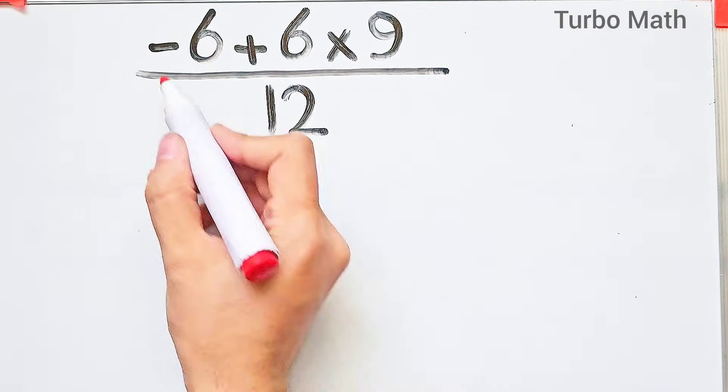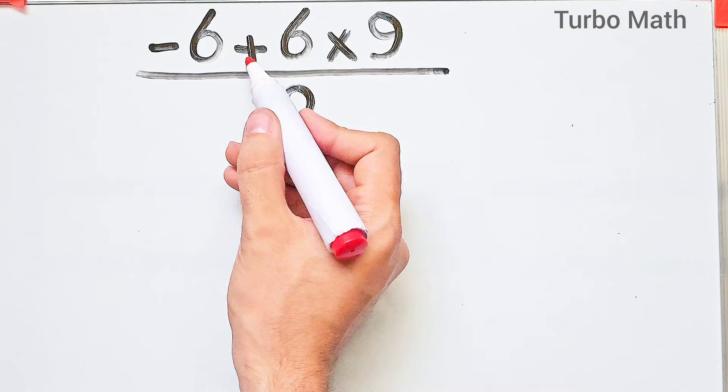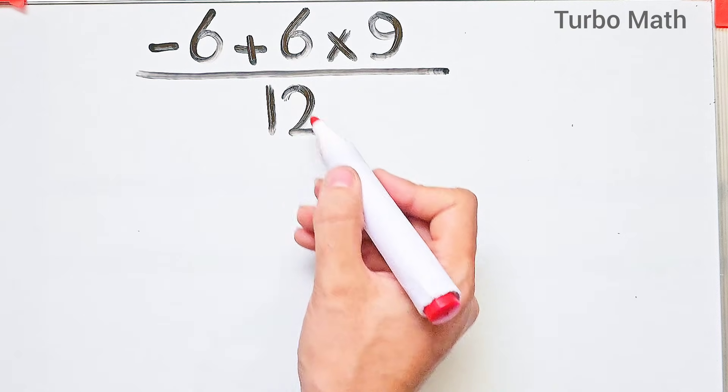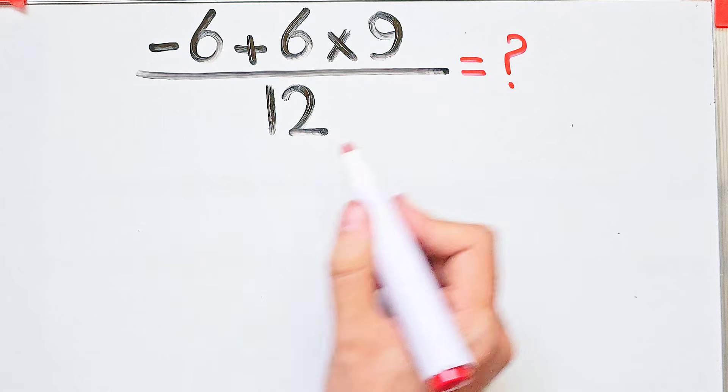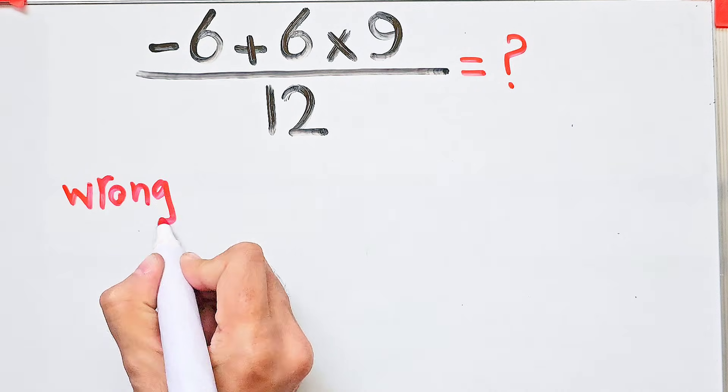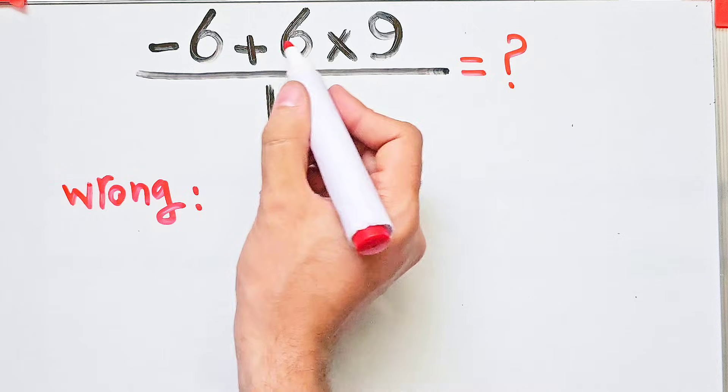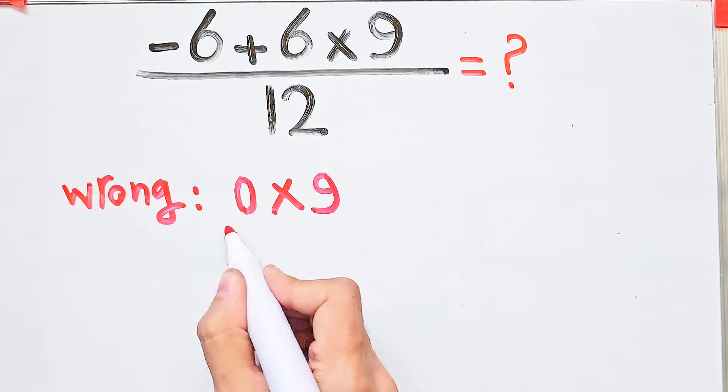Hi friends, welcome to Turbo Math Channel. Can you solve this question: negative six plus six, then times nine, then over twelve? In the wrong way of solving this question, some people don't pay attention to the priority of the mathematical operations. They start from the left and simplify the numerator.